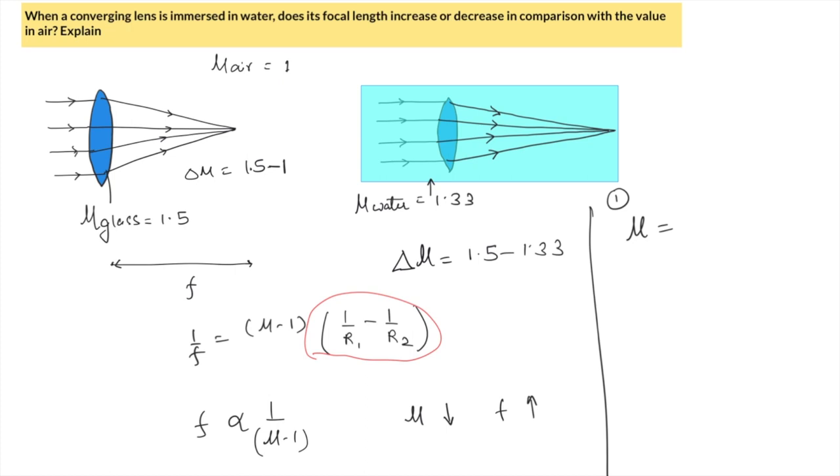In the first scenario, which is in air, μ was μ_glass divided by μ_air. Since μ_air is 1, it was just μ_glass. But now in the second case, this μ will be μ_glass divided by μ_water, and that value will be lower.